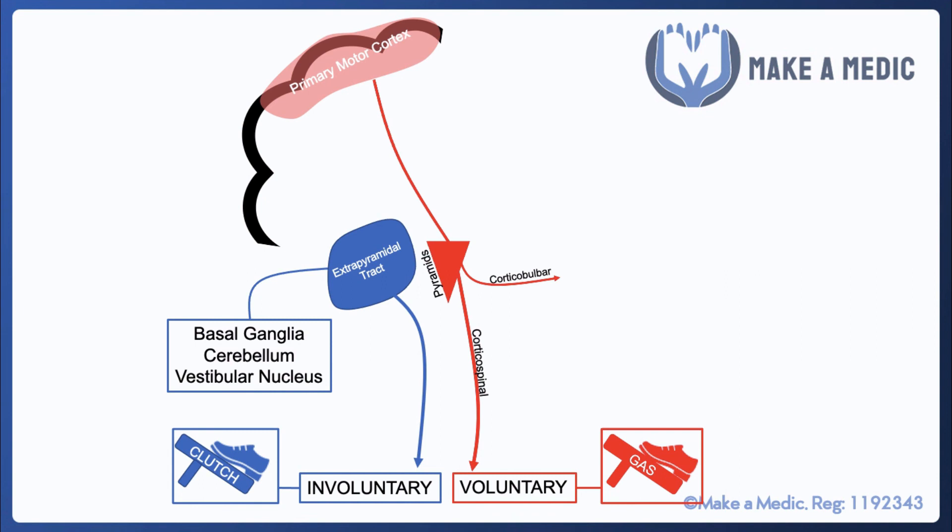In terms of the disease entities that can affect these two pathways, strokes are an example of something that can affect the primary motor cortex and hence the pyramidal system. And Parkinson's disease is an example of something that affects the extrapyramidal tract, as it causes the degeneration of dopaminergic neurons within the substantia nigra of the basal ganglia.